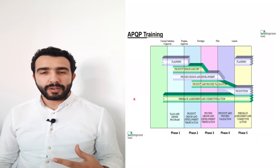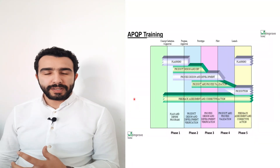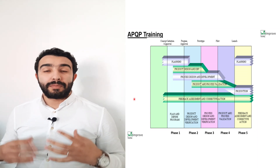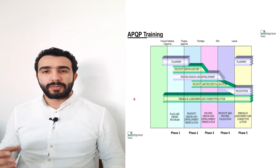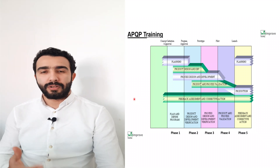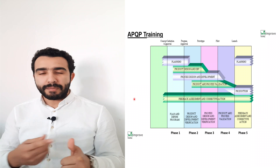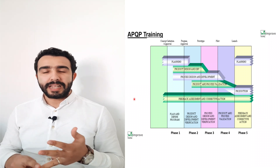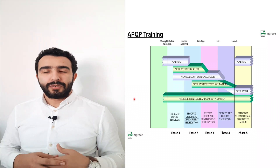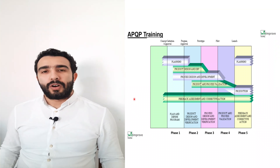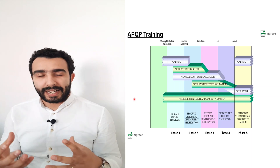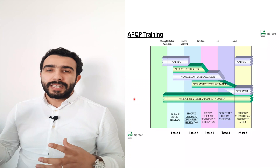In this video I will explain the APQP, or Advanced Product Quality Planning, which is part of the core tools in the automotive industry. There are five core tools: FMEA, PPAP, SPC, MSA, and APQP. APQP is the project management framework in the automotive industry, which includes all the other core tools inside it.